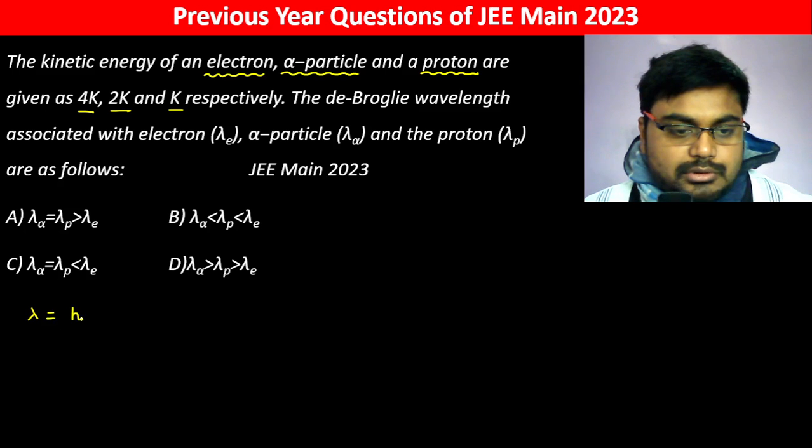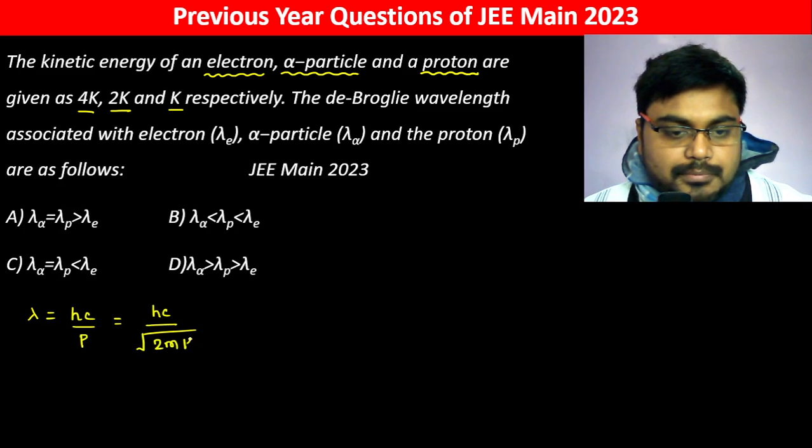Lambda is equal to hc by p, where p is momentum. This equals hc divided by root over 2mk.